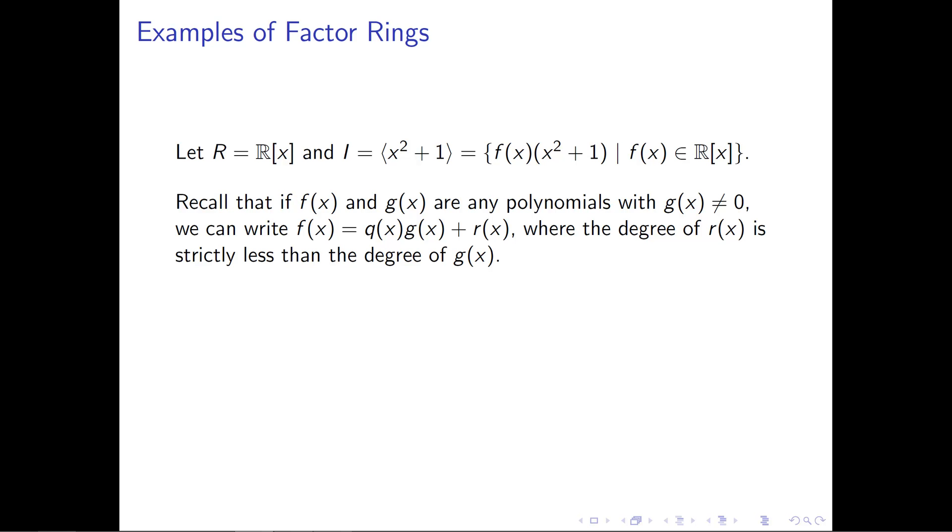What this should remind you of is the quotient remainder theorem that we have for regular plain old integers. So for example, if I take 31, which is a number, and 6, which is another number, I could think of my 31 kind of like f of x and g, the smaller thing, which is 6. I can take 31 and divide it by 6, it's not going to divide evenly, but I can take 31 and I can write it as 5 times 6 plus 1 left over, where 1 is smaller than 6.